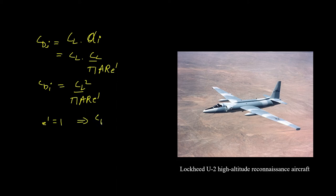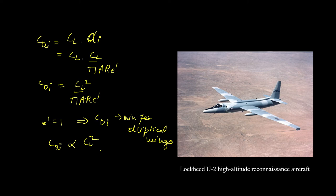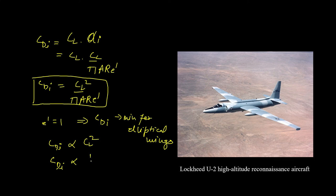Since e' equals one for an elliptical wing, C_Di is minimum for elliptical wings. From the formula we can see that C_Di is directly proportional to C_L². So near C_L max, C_Di holds a substantial value and becomes a major part of total drag. We may also conclude that C_Di is inversely proportional to aspect ratio.